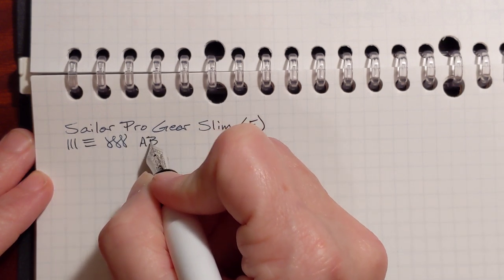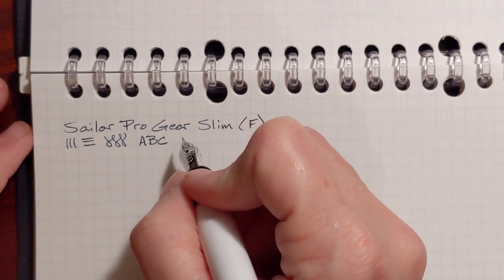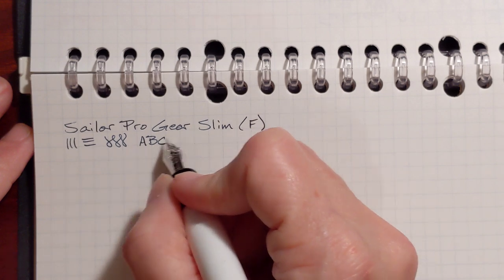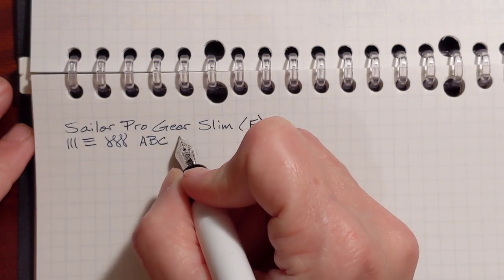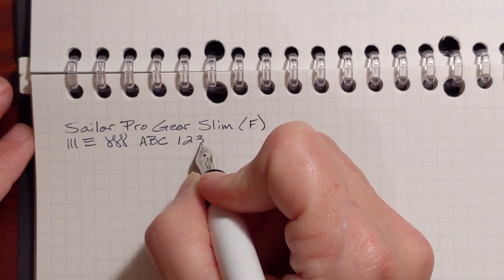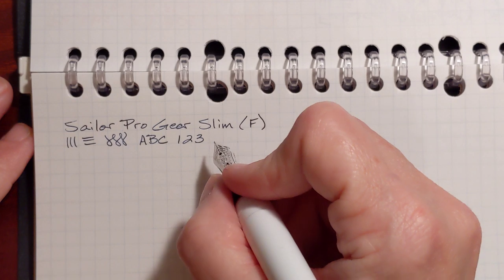Especially on very smooth paper. Like this is Maruman paper in my Plue binder. This is very pleasant to write on with this pen. I also enjoy writing on Tomoe River and Rhodia paper.